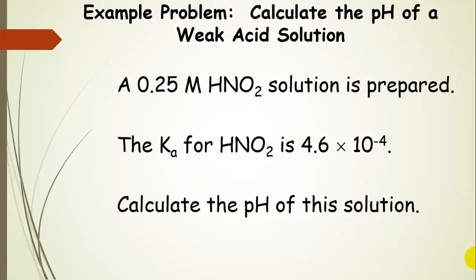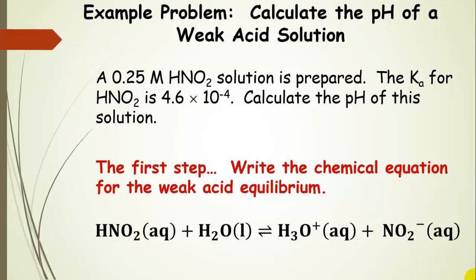Let's do an example problem with a different weak acid. We're going to prepare a 0.25 molar nitrous acid solution. The Ka for nitrous acid is 4.6 times 10 to the negative 4, and we want to calculate the pH of this solution. The first step on all of these problems: write the chemical equation for the weak acid equilibrium. You have to write it out — that will give you an idea of where to go from there.